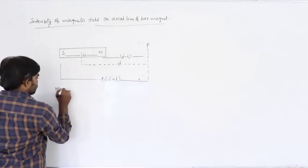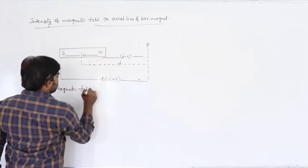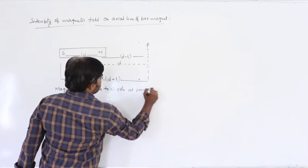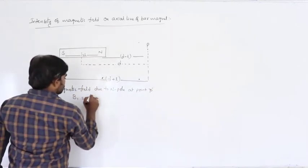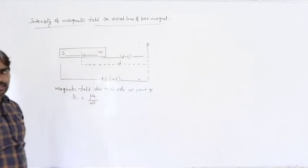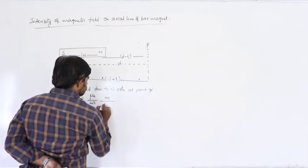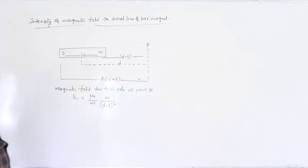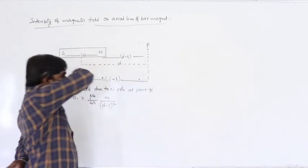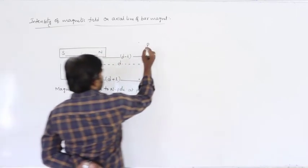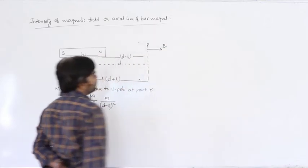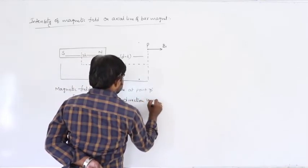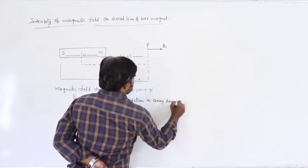The magnetic field due to the north pole (isolated pole) at point P is B₁ = μ₀/4π × m/(d − l)². To find the direction, we consider a unit north pole at P: north-north repulsion means B₁ points away from the north pole.